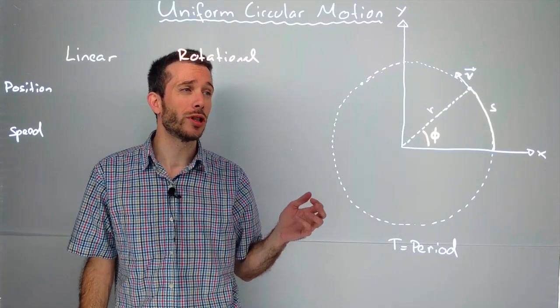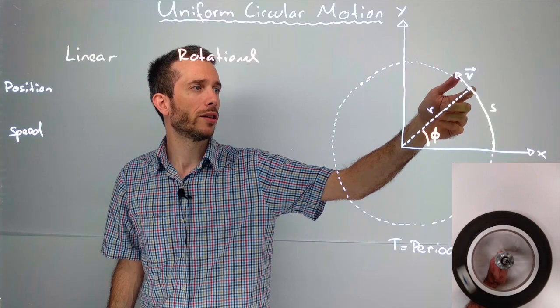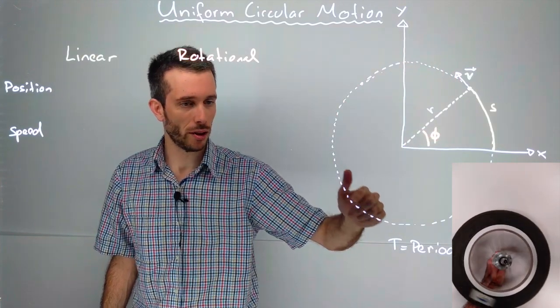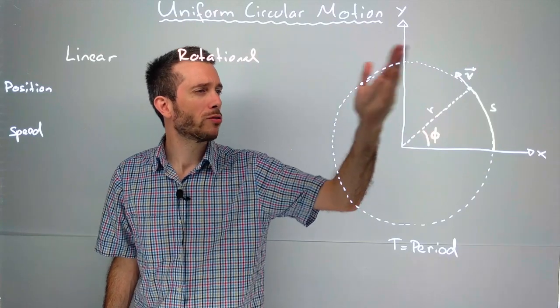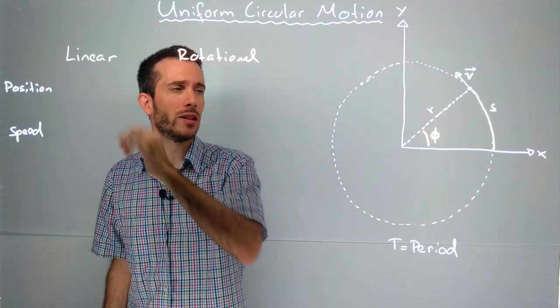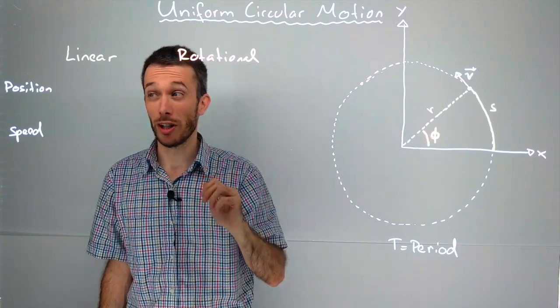In uniform circular motion, we have a particle that follows a circular path at a constant speed. We have two ways of describing that motion. One is with linear variables and one is with rotational variables.